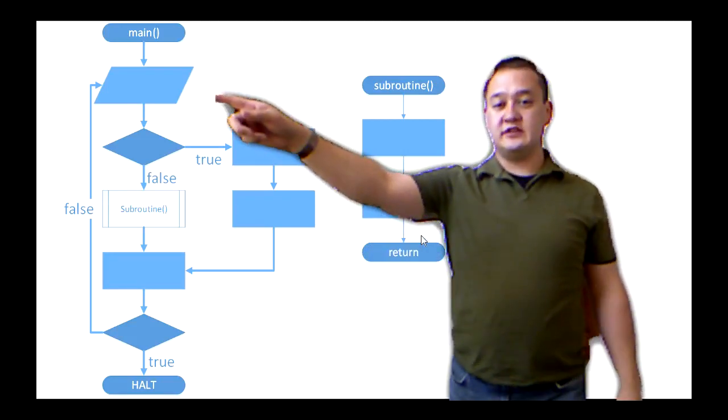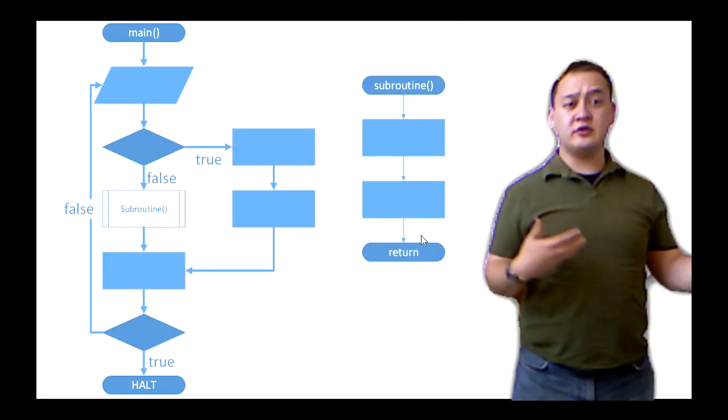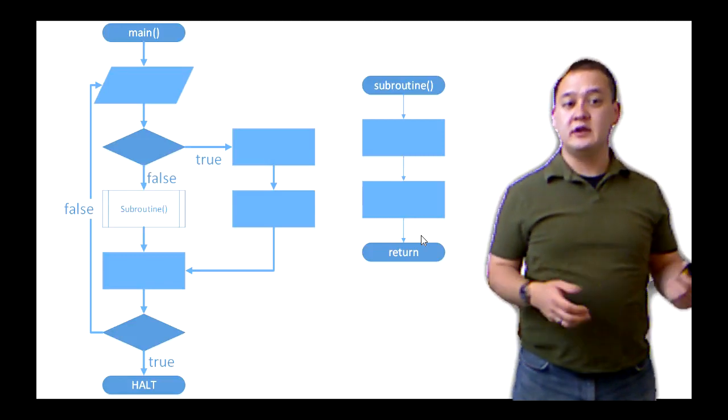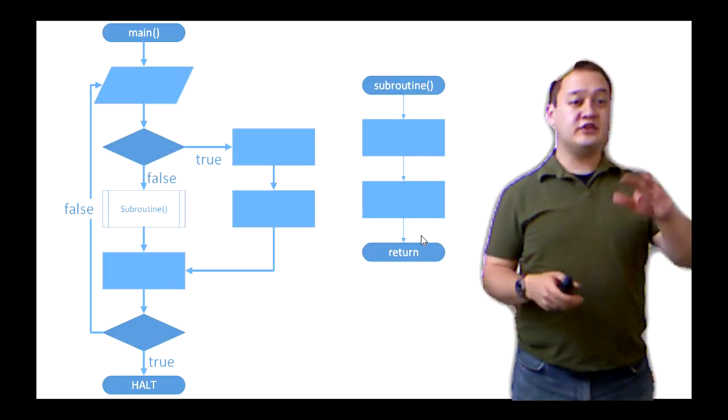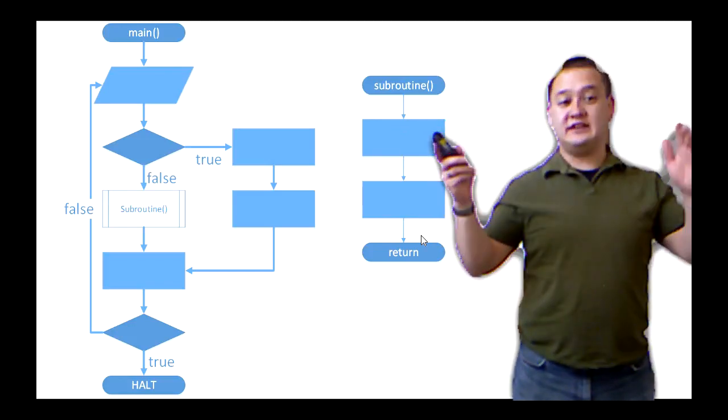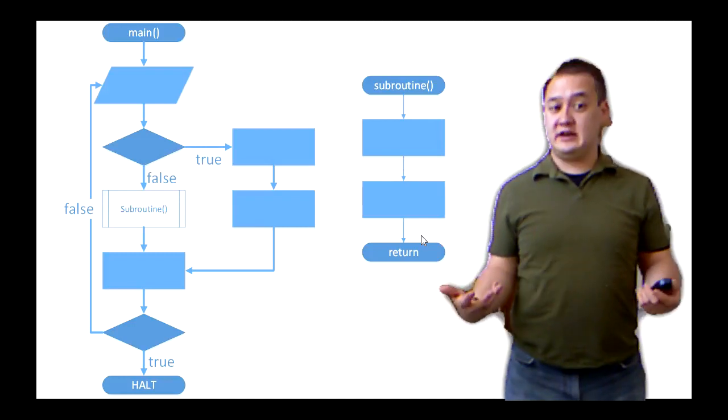Then you've got this trapezoidal shape here. The trapezoid tells us that we're going to be looking for input or output from the user. So for example, we might start off with enter a number, like 18 here. And the user enters 18, and then the program is going to do some processing based on that number.